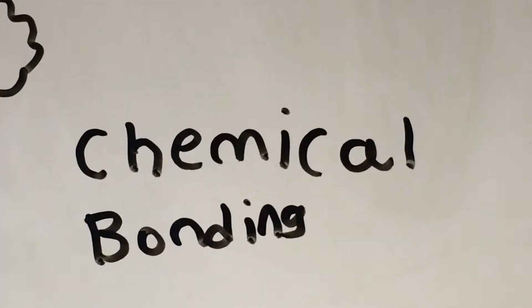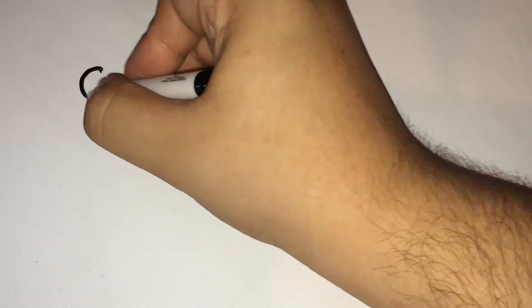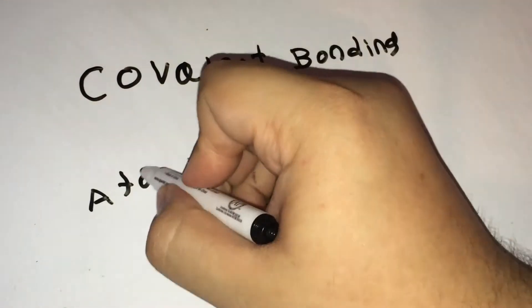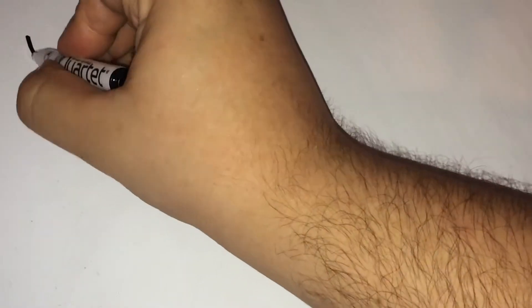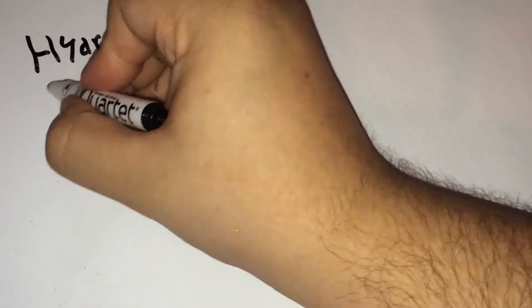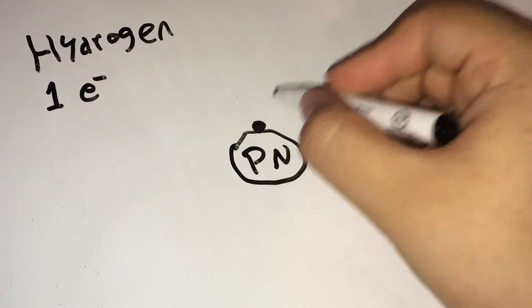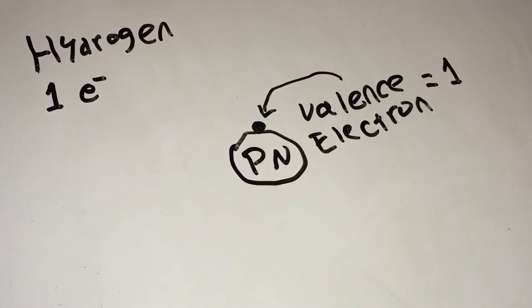There are several types of bonds, but today we are talking about covalent bonding. This pretty much means the sharing of electrons. So let's say we have hydrogen. Hydrogen has one electron, so after drawing the element, we can see that it has one valence electron, meaning that it has one electron in its outermost level. This also means that it isn't stable.